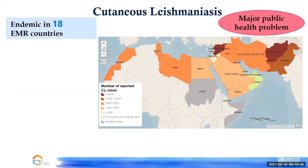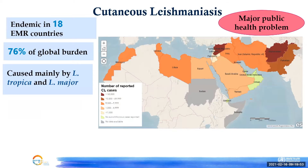As mentioned, Leishmaniasis is endemic in 18 countries, and our region carries 76% of the global cutaneous leishmaniasis burden — making this a significant public health problem. The parasites Leishmania tropica and Leishmania major are mainly responsible for cutaneous leishmaniasis in our region.